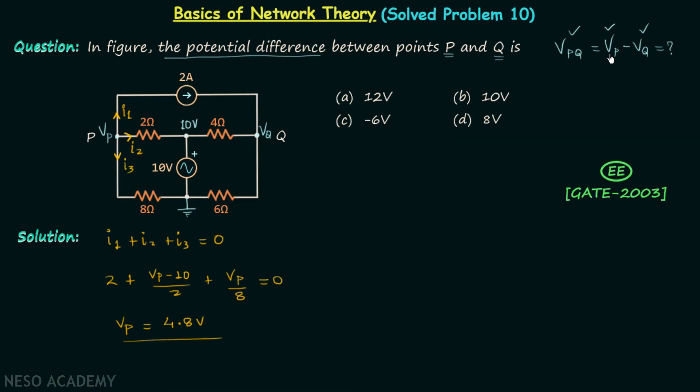So we have calculated VP, it is 4.8 and now we will calculate VQ. To calculate VQ we will assume VQ is the largest potential in the network and therefore all the currents will leave the node Q. Let's say this current is equal to I1 prime, this current is equal to I2 prime.